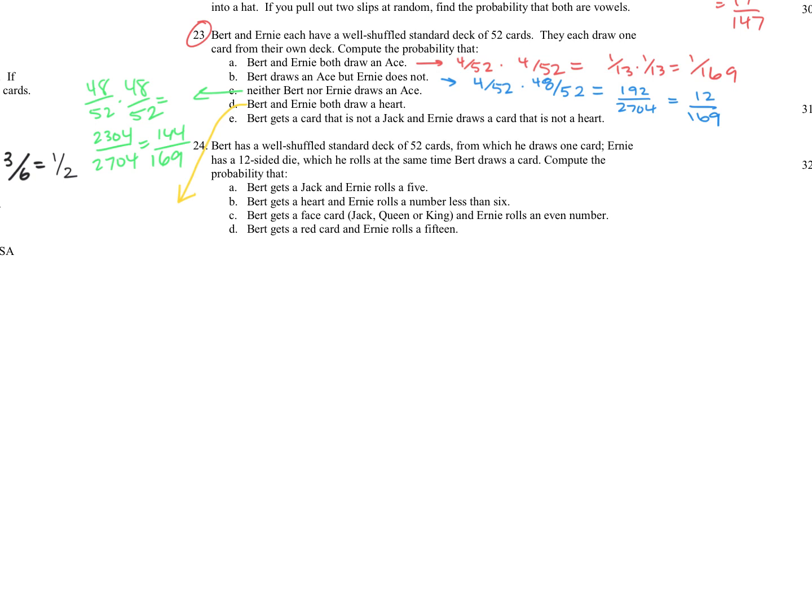But for part D, Bert and Ernie both draw a heart. So to draw a heart, remember the probability of that would be 13 out of 52, or we could say 1 fourth, and then it's again 13 out of 52 for the other heart, or again, we could say 1 fourth, which becomes 1/16. And if you multiply the 13 times 13, we get 169 over 2704, which would reduce to that same 1/16 answer.